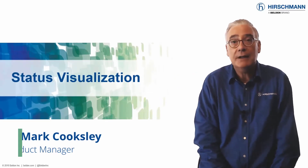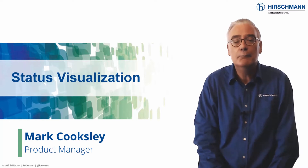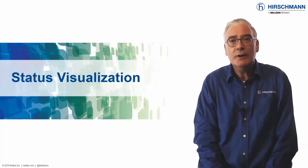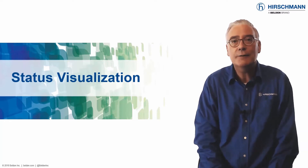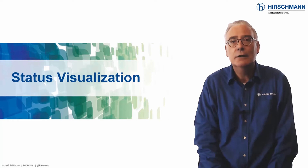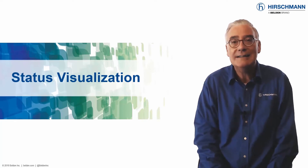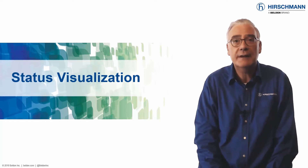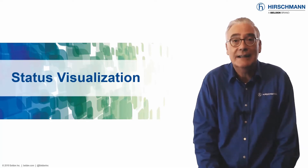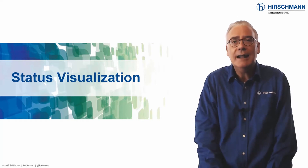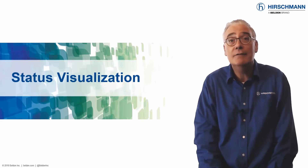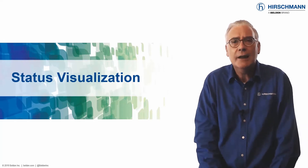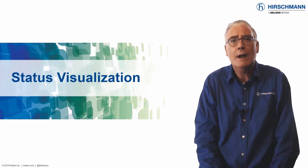In many aspects of life, colors are used to convey meaning. Reacting to colors is instinctive. Industrial HiVision enables you to take advantage of how people react to colors. You can use colors to highlight any network condition which you consider deserves attention from the network operator, together with its criticality. And like almost everything else in Industrial HiVision, the colors themselves are customizable. So use colors to push focus where it's needed.